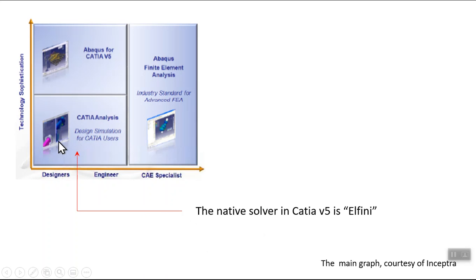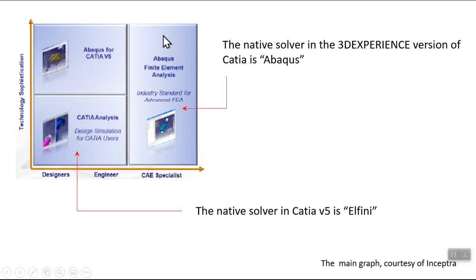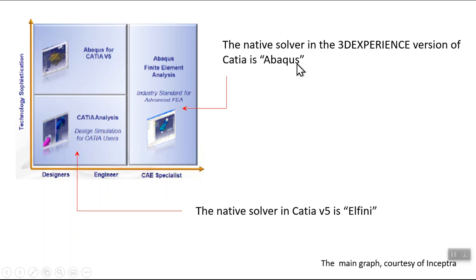The native solver embedded in Catia V5 is a program called Elfini — it's a stripped-down version, but it does the basic stuff that a typical engineer or student may need. Abaqus was acquired by Simulia Corporation, which is part of the DS systems — the same owners of Catia — and it's a very good FEA solver. Because DS is moving towards 3D Experience, Catia in disguise is appearing there, and the FEA solver, which was Elfini, is replaced with Abaqus if you get the license.